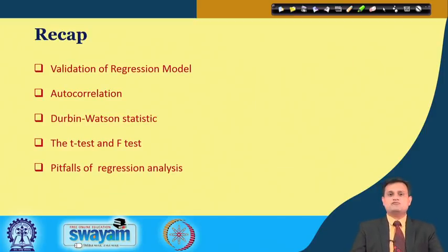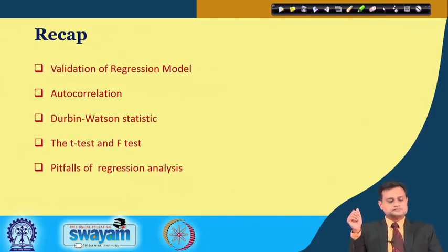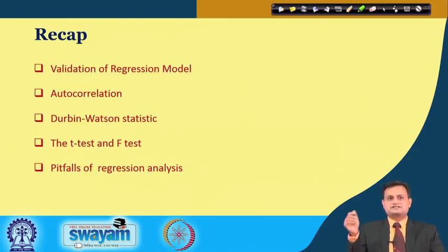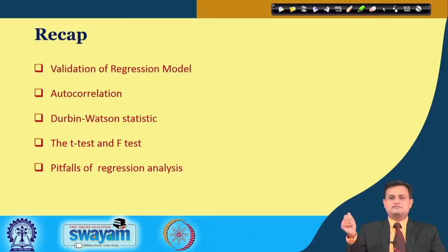If you see what we discussed in the last class, we had seen the validation of the regression model, and as a part of that we had seen autocorrelation, Durbin-Watson test, T-test, and F-test for checking the significance of coefficients of the regression model and pitfalls of regression analysis.